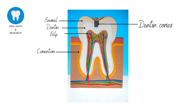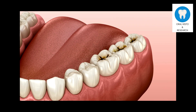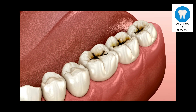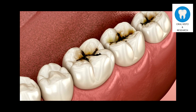Dentin caries is a prevalent dental condition caused by the demineralization of dentin, the hard tissue that forms the bulk of a tooth, due to bacterial activity. It typically begins in enamel and then progresses into the dentin if left untreated.